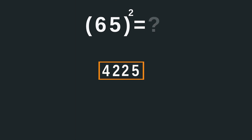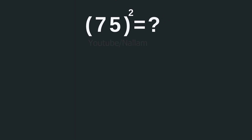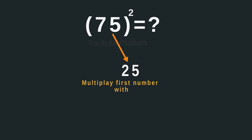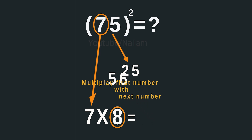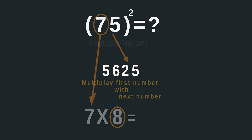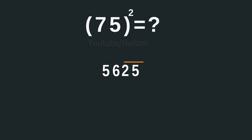Now 75. Multiply the last digits: 5 times 5 equals 25. Then multiply the first digit, which is 7, with its next digit, which is 8. So 7 times 8 equals 56. Now join these results together, 25 and 56, to get your final answer, which is 5625.